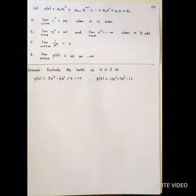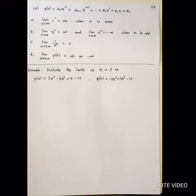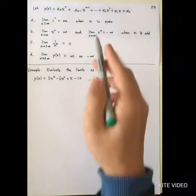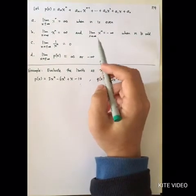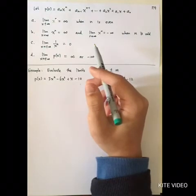The last part of the limit topic may ask you to evaluate the limit when the value approaches infinity. This is sometimes useful in economics — for example, you might be asked to evaluate whether the growth of GDP approaches zero or keeps increasing when time goes to infinity. Therefore, you may be asked to evaluate the limit when the value goes to infinity.